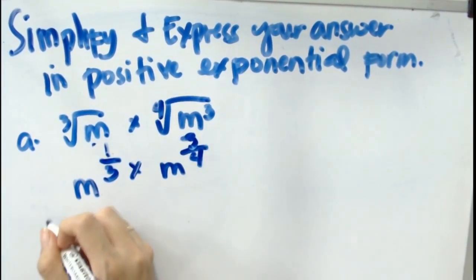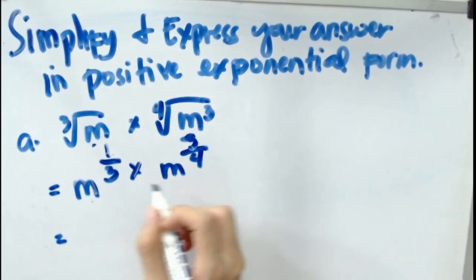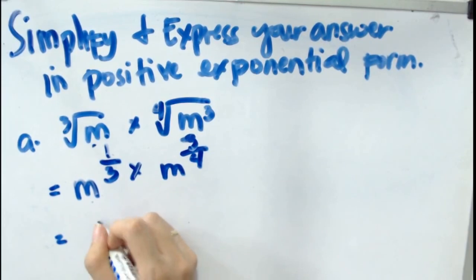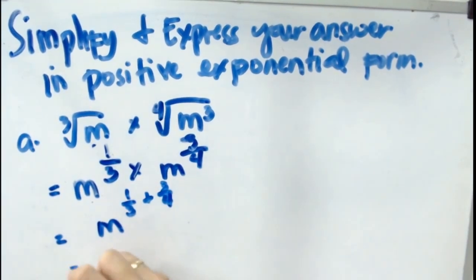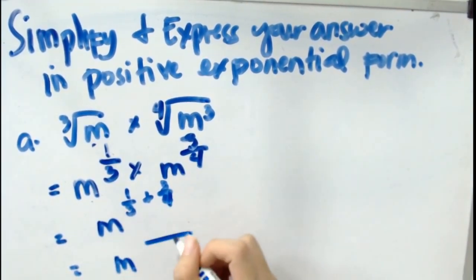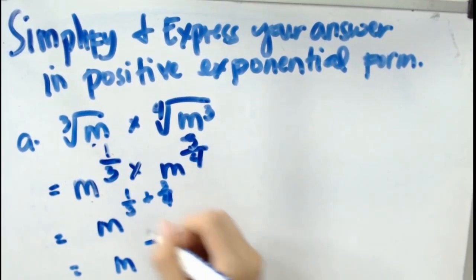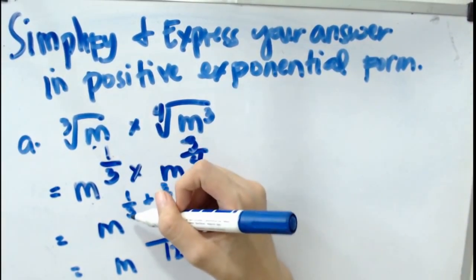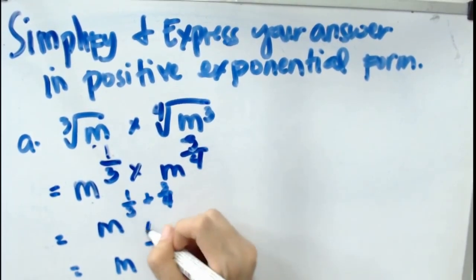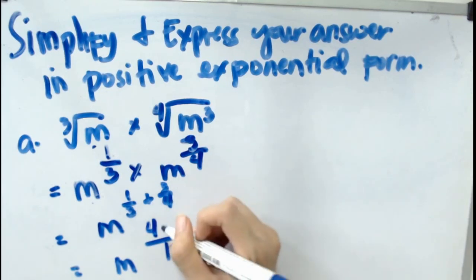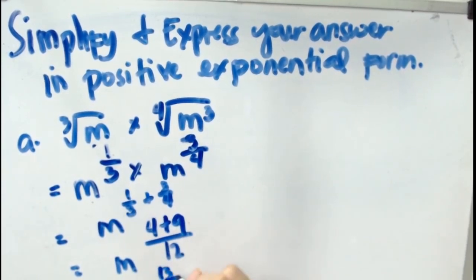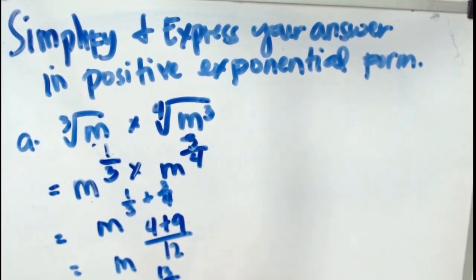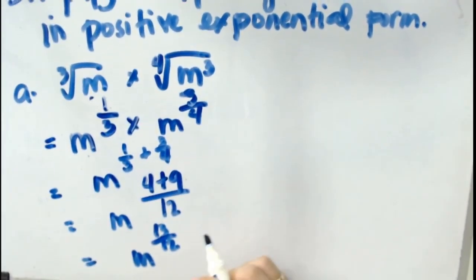Then we solve. According to the rule of exponents, if we have the same base, we just add the exponents. So we have m raised to 1/3 plus 3/4. Dealing with fractions, we find the LCD which is 12. 12 divided by 3 is 4, times 1 is 4. 12 divided by 4 is 3, times 3 is 9. So m raised to 4 plus 9, which is 13, over 12. Our final answer is m raised to 13 over 12.